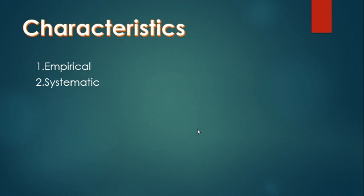Number two: Systematic. Systematic means there are procedures to be followed and the researchers are advised to follow the research guidance. Number three: Controlled. In controlled, all variables must be kept constant except those that are tested.